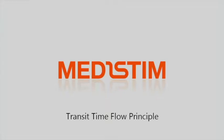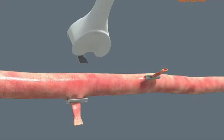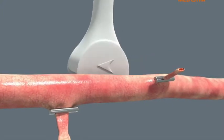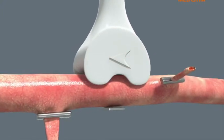Transit Time Flow Measurements works by calculating the difference in transit time for two ultrasound pulses traveling in opposite directions through the bloodstream. The probe wraps around the vessel and ensures that the measurement geometry is known.